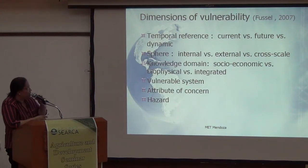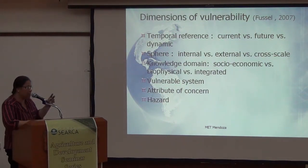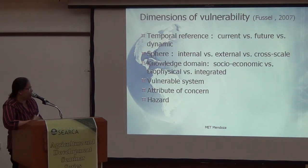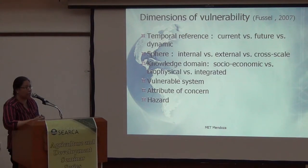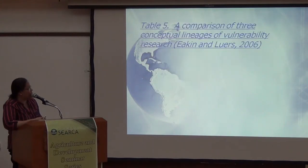Fossil reviewed the requisites for vulnerability research and came up with dimensions of vulnerability that must be taken into consideration. The hazard, the attribute of concern, and the vulnerable system are still there, but Fossil added the temporal dimension — whether it is current, future, or dynamic — and the sphere dimension — whether internal, external, or cross-cutting — and the knowledge domain — whether socioeconomic, biophysical, or integrated.